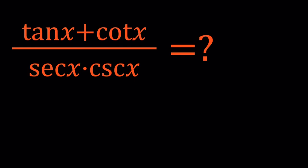Hello everyone, in this video we're going to be simplifying a trigonometric expression. We have tangent x plus cotangent x divided by secant x times cosecant x.